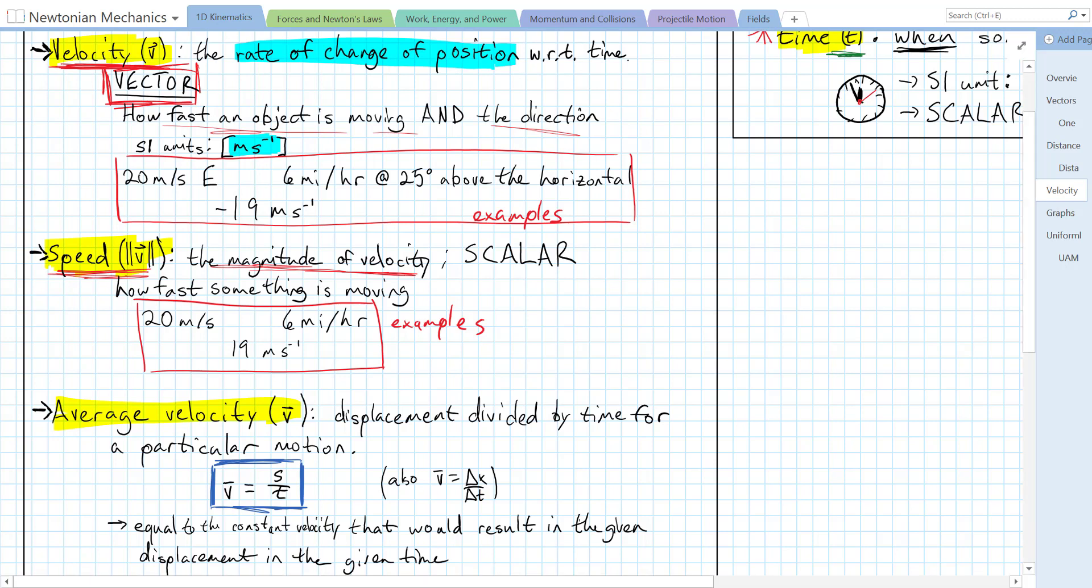Now, if we want to calculate velocity, well, sometimes that gets difficult because, for example, if you're driving in your car, you're going to be speeding up and you're going to be slowing down. So at every different point in time, you might have a different velocity and a different speed. So in order to simplify our calculations, we are going to define these quantities and tell us about the average velocity and average speed.